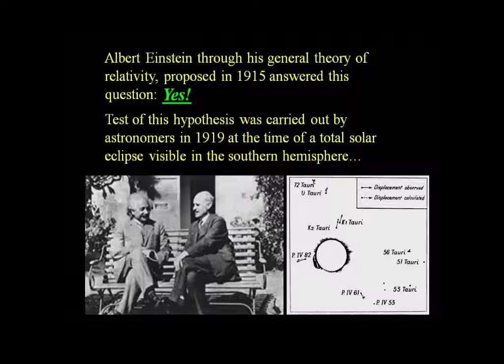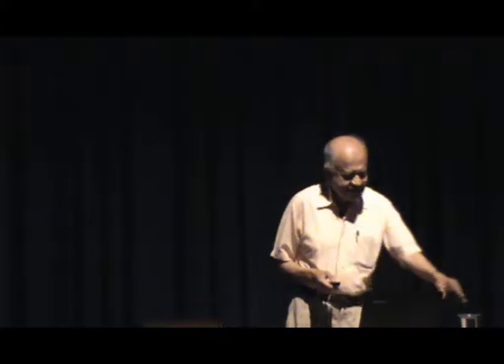Several years passed and then came Albert Einstein on the scene with a new theory of gravity — the general theory of relativity. It is supposed to be the centenary year of relativity, because the theory was formulated in 1915 and we are now in 2015, so 100 years have passed. This is a very important year in terms of the age of this theory.